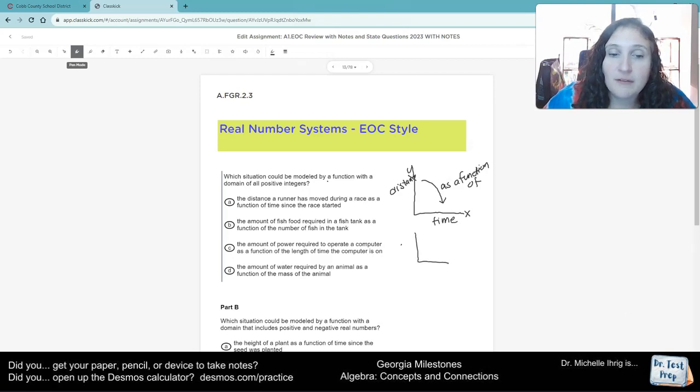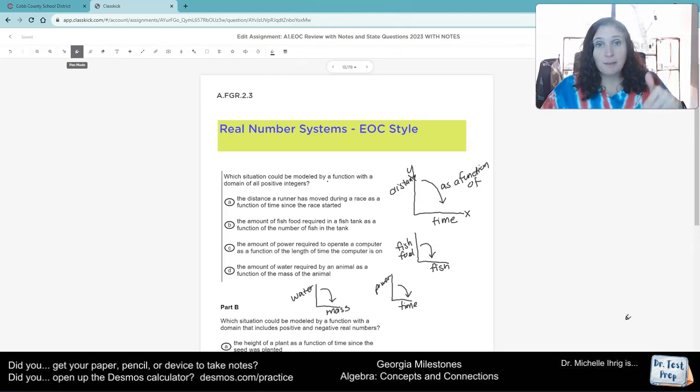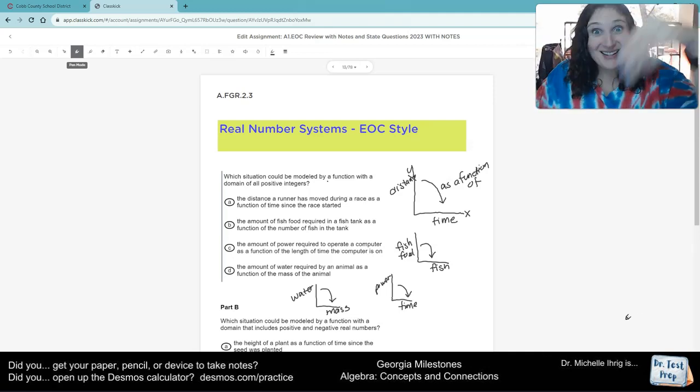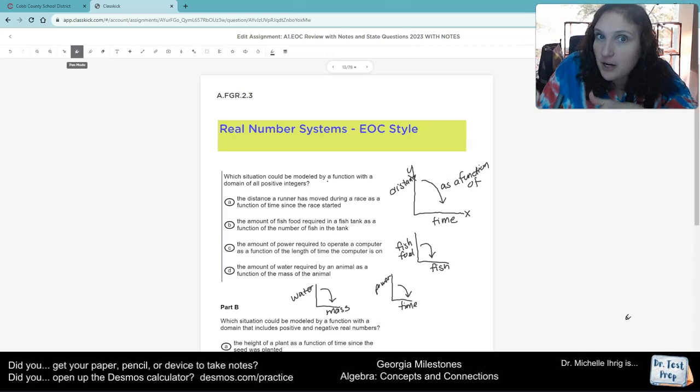Here's our next one. Fish food as a function of fish. I'm running out of space, but we'll keep going. Power as a function of time. So we just follow it up down. Water, an animal drinks as a function of mass. So that's the first thing to remember is that we're starting with the y-axis and as a function of means going down to the x-axis.